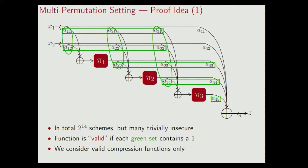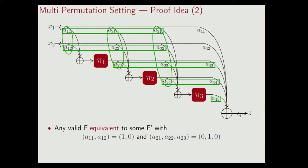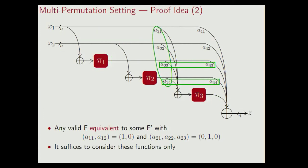So it suffices to consider compression functions of this form only. Now in the second part of the proof, using the idea of equivalence classes, we proved that if you take any compression function of this form, this function is either equivalent to a non-valid compression function, in which case we can forget about it, or it is equivalent to a function F prime with a11, a12 equal to 1, 0 and a21, a22, a23 equal to 0, 1, 0. So any compression function F is equivalent to some F prime where the input to pi 1 is x1, and the input to pi 2 is x2. By the definition of equivalence classes, it suffices to consider such functions only.